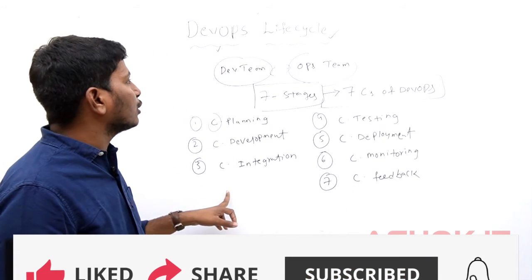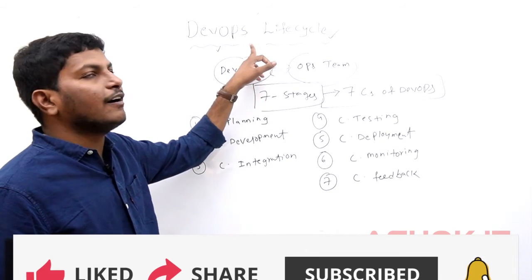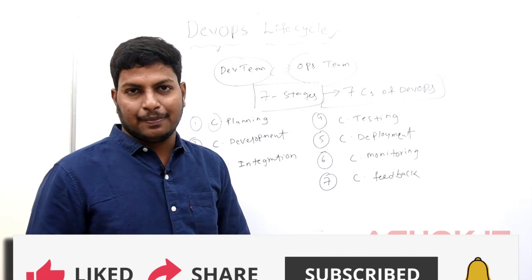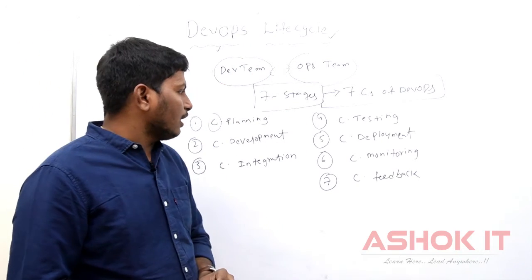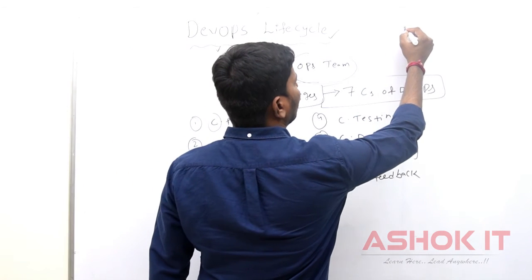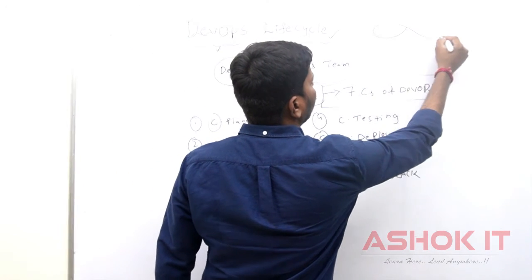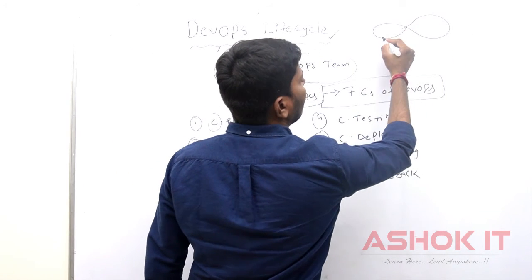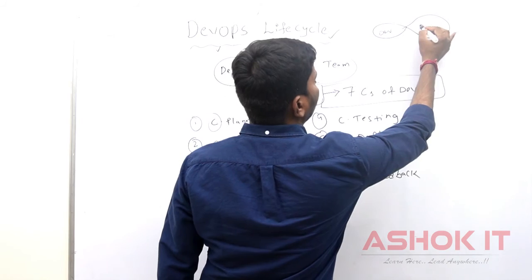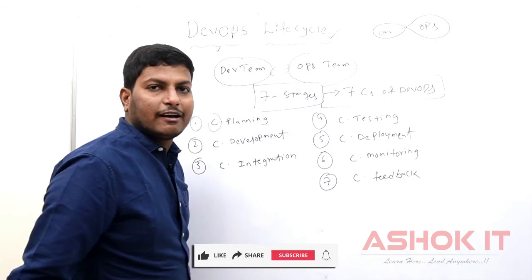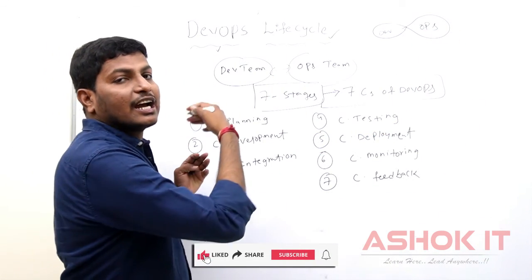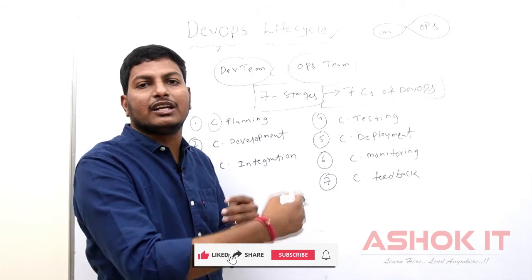If you see the DevOps logo, an infinite symbol is available — representing dev and ops together, showing that development plus operations are continuous activities.